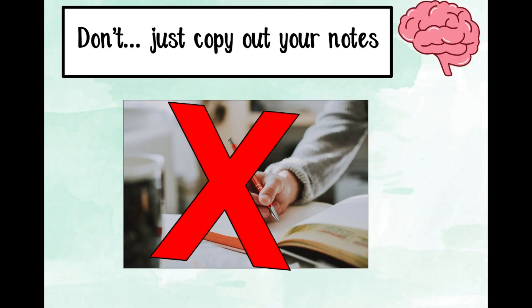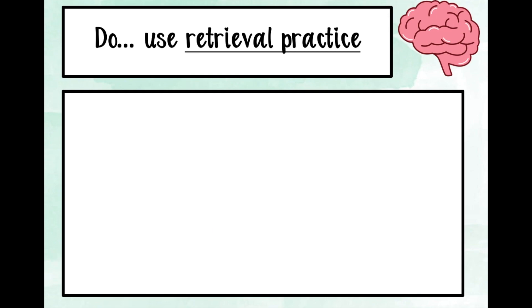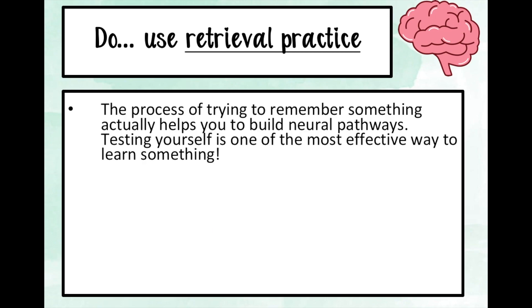Now let's talk about how to revise. I'm guilty of this myself — as a student I just copied out my notes over and over, which was a waste of time. Don't do that. Do use retrieval practice. The process of trying to remember something actually helps you build neural pathways. Testing yourself is one of the most effective ways to learn because when you're trying to remember something, your brain is forming neural pathways at that moment. Retrieval practice will both show you what you do and don't know, and actively help you learn.